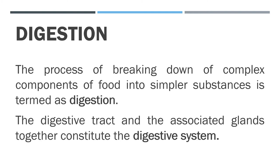The components of food such as carbohydrates are complex substances. These complex substances cannot be utilized as such, so they are broken down into simpler substances. This process of breaking down of complex components of food into simpler substances is termed as digestion.